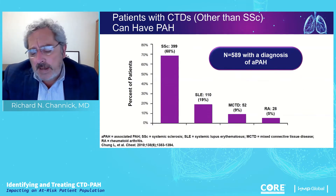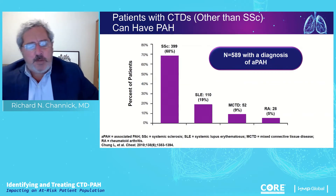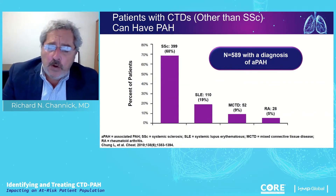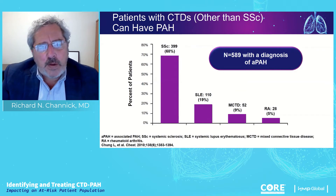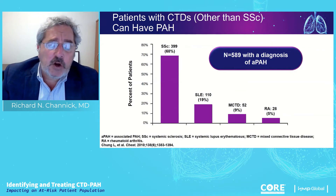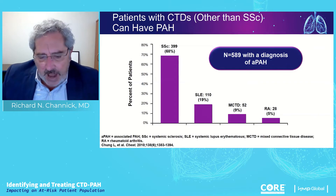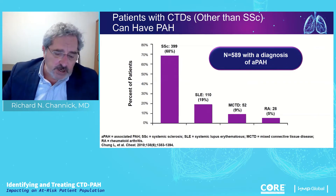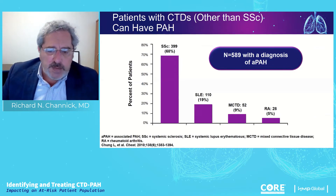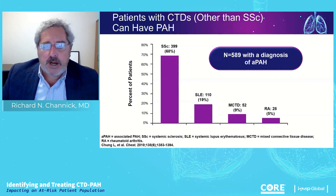Although we often talk about scleroderma, there are other connective tissue diseases — like lupus, mixed connective tissue disease, and rheumatoid arthritis — that are also associated with PAH, maybe to a somewhat lesser degree. So any of your patients with connective tissue disease should be monitored for pulmonary arterial hypertension.